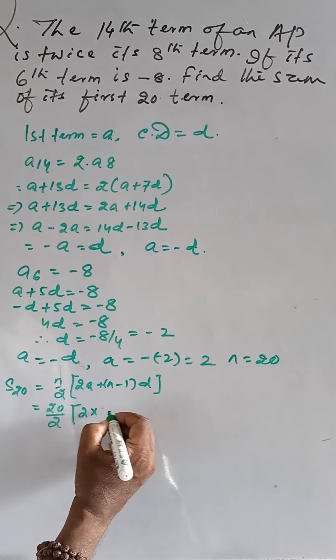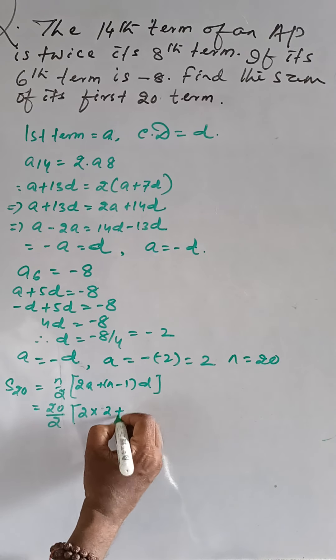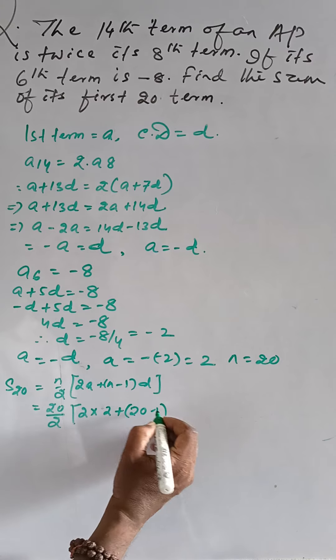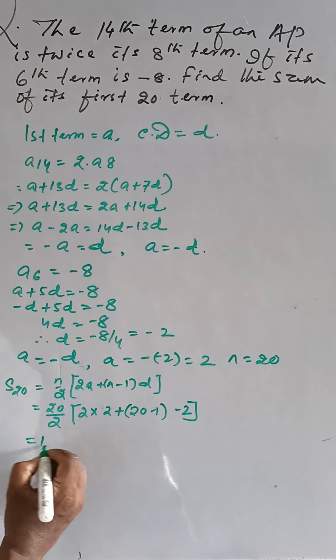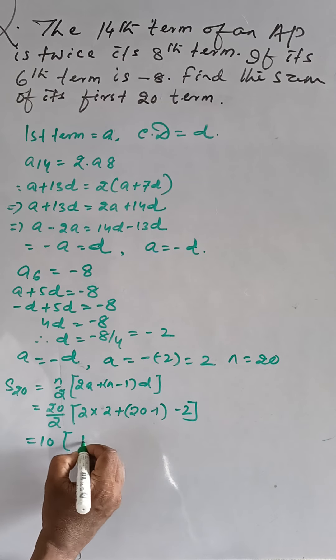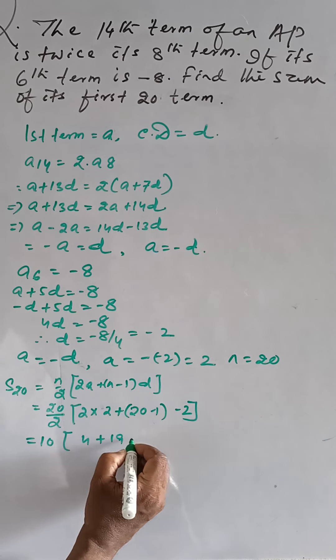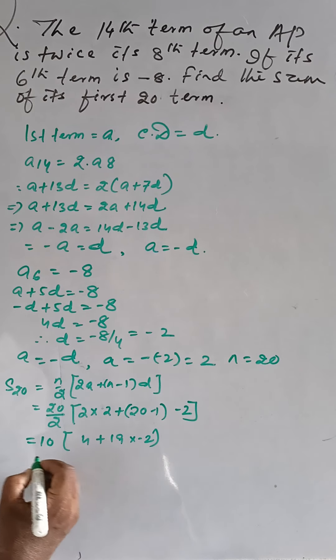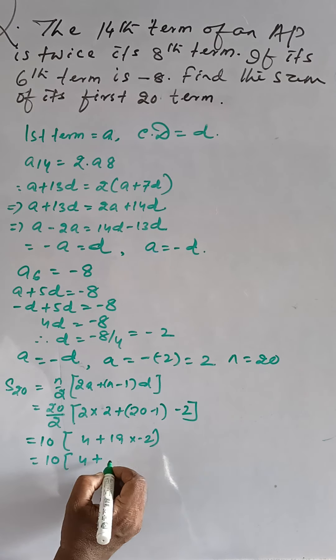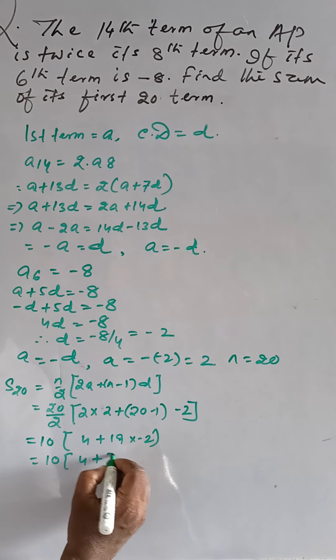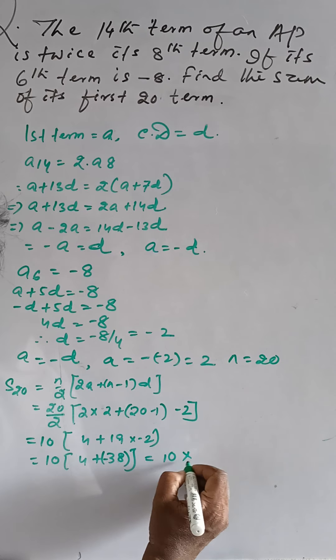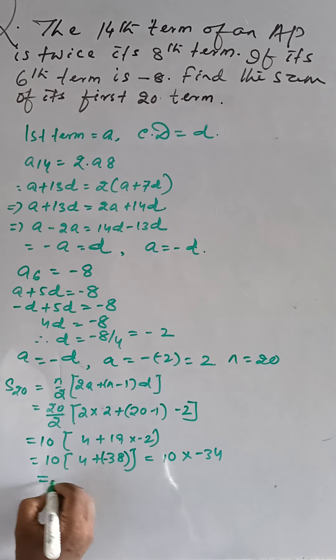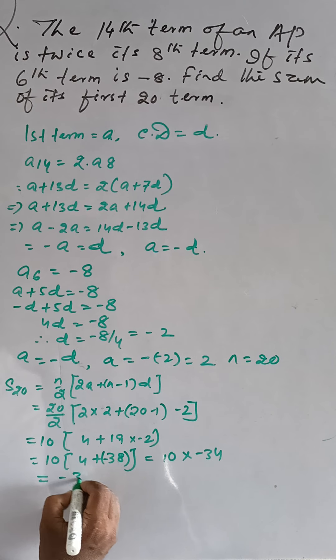2 into, for A it is 2, 20 minus 1 and D is equal to minus 2. This is 10 into 4 plus 19 into minus 2. 10 into 4 plus 38 minus is equal to 10 into minus 34 is equal to minus 340 is the answer.